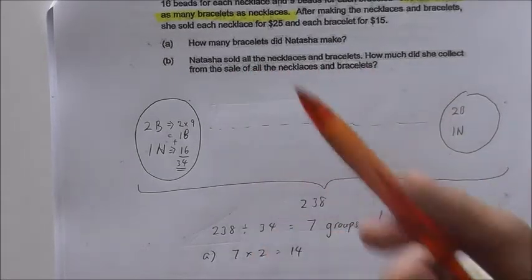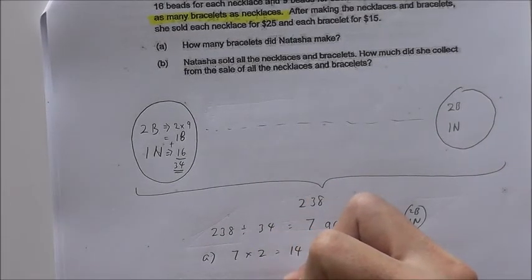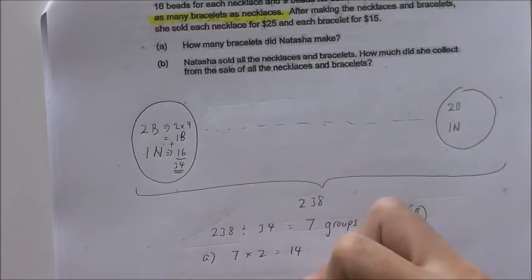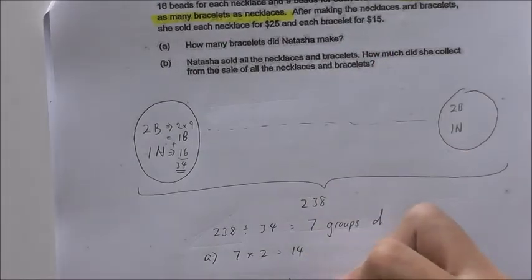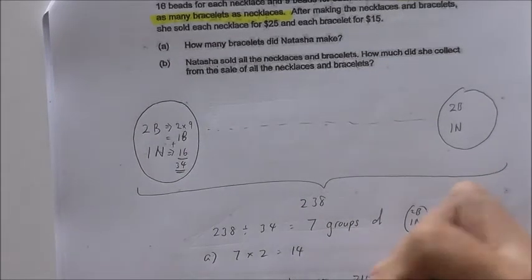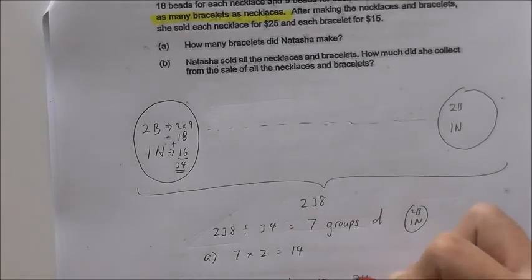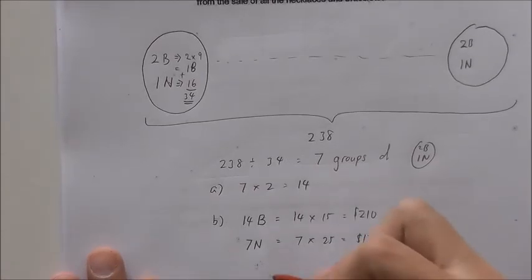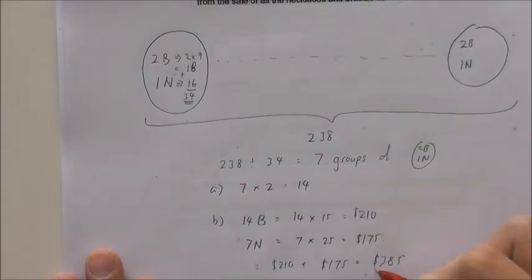So how much did she collect from all the sales? We know there are 14 bracelets and 7 necklaces. For 14 bracelets at $15 each: 14 times 15 equals $210. For 7 necklaces at $25 each: 7 times 25 equals $175. So the total she collected is $210 plus $175 equals $385.